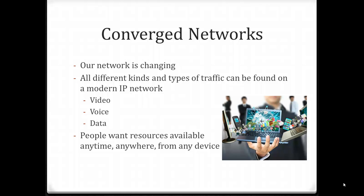Think of networks such as Verizon Wireless as an example. With Verizon Wireless, you can send text messages, you can call, you can stream video, you can surf the internet — all over their one IP network. People want resources available to them anytime, anywhere, and from any device. Having a converged network is vital to be able to provide all of these services on any device that they wish.